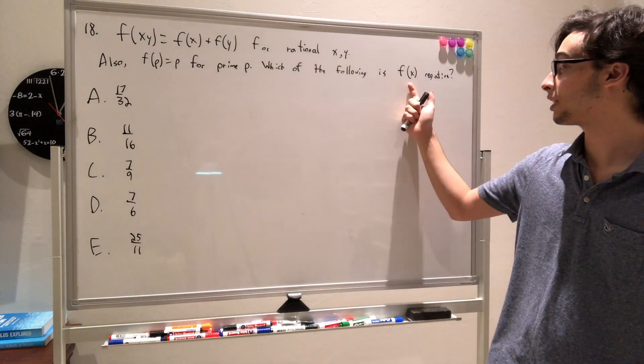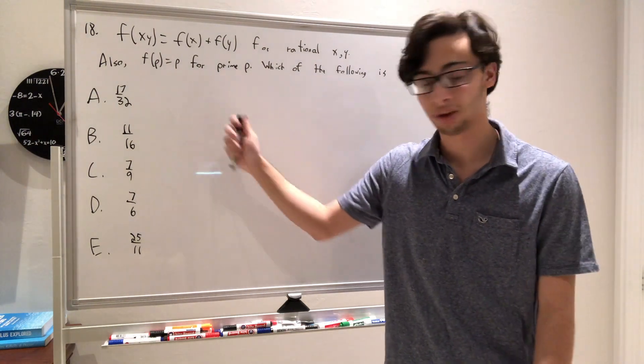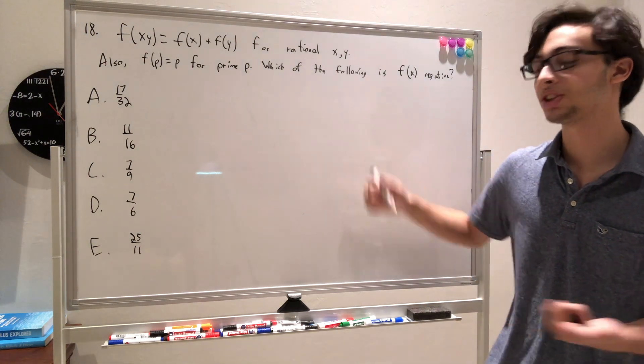So now we have which of the following is equal to f of x negative - f of 17 of 32, f of 11 of 6, and so on. Which of those is negative? Well, how do we start this? Let's just start with what we know.